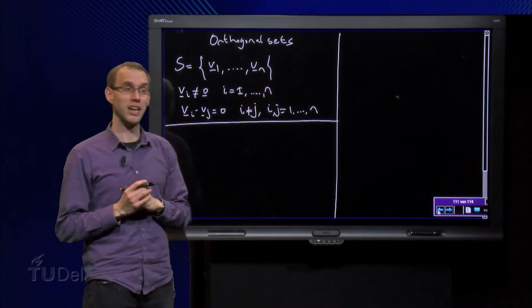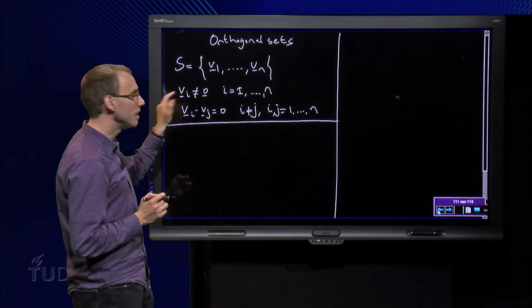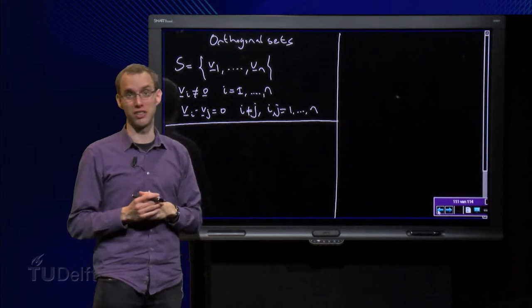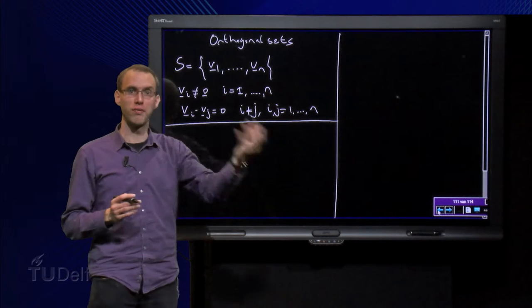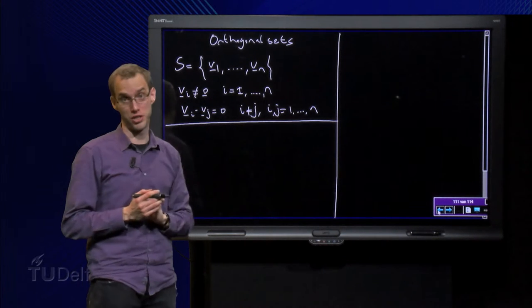Suppose we have a set S containing N vectors, and we need to have that there are no zero vectors in the set. If the set would contain zero vector, it is dependent immediately. So we assume that there are no zero vectors.